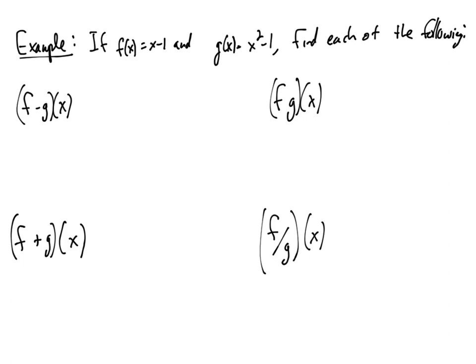So f minus g of x, all that this means is we take the f function and we subtract the g function. So we're going to have x minus 1 minus the entire g function: x minus 1 minus x squared plus 1. The ones will cancel. We end up with x minus x squared.